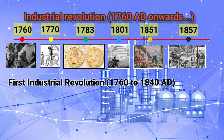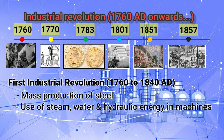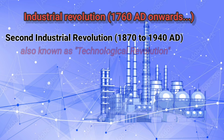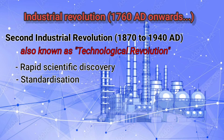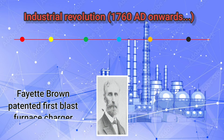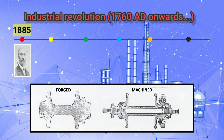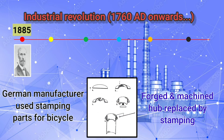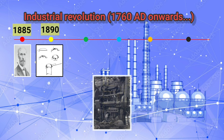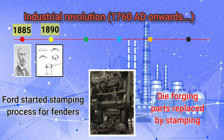The first industrial revolution witnessed the mass production of steel, use of steam, water and hydraulic power in machines, and fundamental changes in manufacturing processes. The second industrial revolution, also known as the technological revolution, was a phase of rapid scientific discovery, standardization, mass production and industrialization. During this time, the first blast furnace charger was patented in 1885. In 1890, a German bicycle manufacturer began making parts for bicycles using metal stampings. In 1913, Ford started a moving assembly line and used stamping parts to replace die forging.